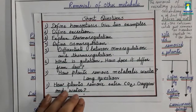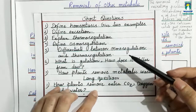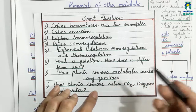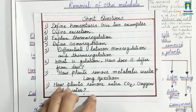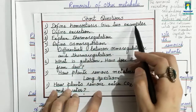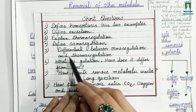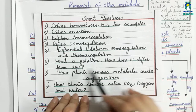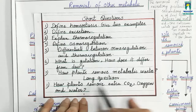At the end, we will discuss short questions from the introduction to homeostasis and homeostasis in plants — covering removal of extra carbon dioxide and oxygen, removal of extra water, and removal of other metabolic waste. Short questions include: Define homeostasis with two examples. Define excretion. Explain thermoregulation. Define osmoregulation. Differentiate between osmoregulation and thermoregulation. What is guttation and how does it differ from dew?